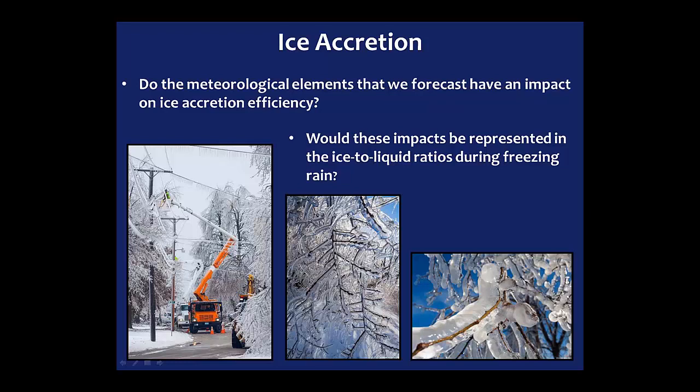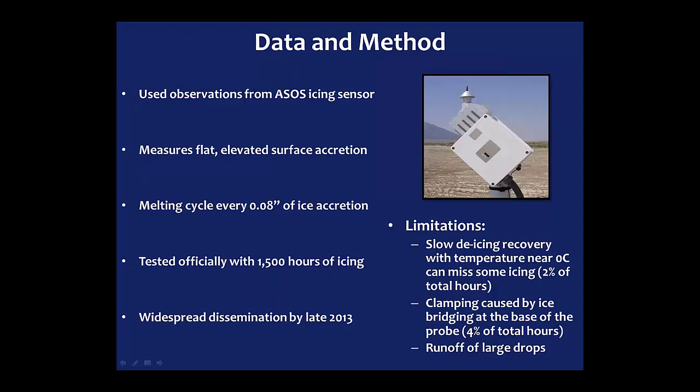We were also asking ourselves whether the meteorological elements we forecast have an impact on ice accretion efficiency, and whether these impacts would be represented in the ice-to-liquid ratio during freezing rain events. At first we were thinking of setting up a device to measure freezing rain, but there were complications. We stumbled onto the iSensor, which is part of the ASOS system, turned on for some sites in late 2013. This sensor measures flat elevated surface accretion — the probe vibrates, and as ice accretes on it, the frequency decreases, which correlates to ice mass and then ice thickness.